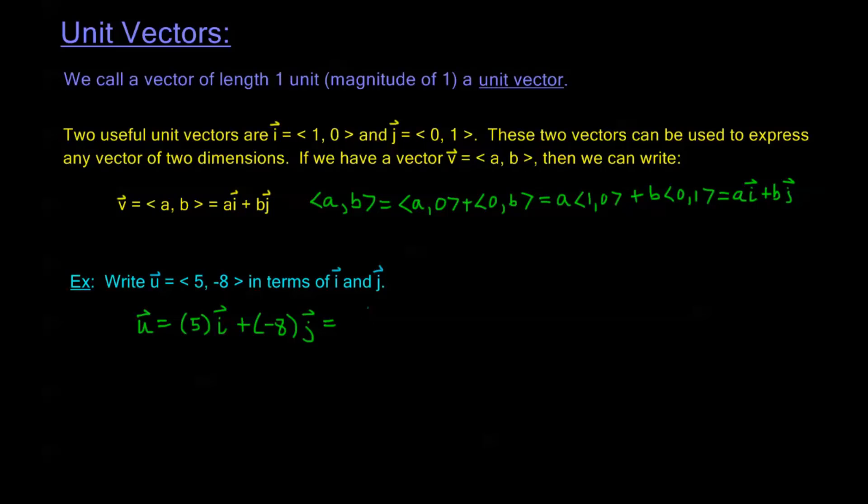So to write this with I and J, all we have to do is write 5I minus 8J because of that definition we had for subtraction. And that's it.